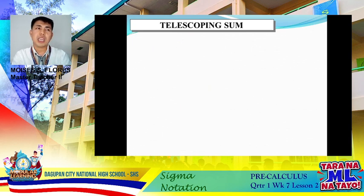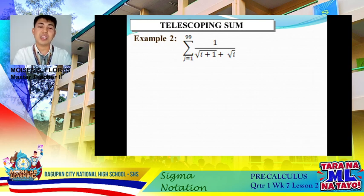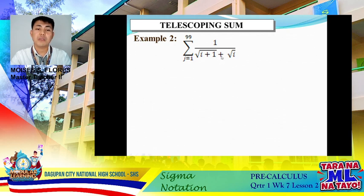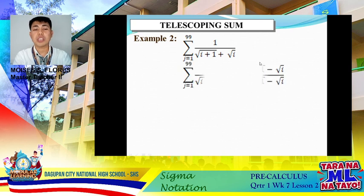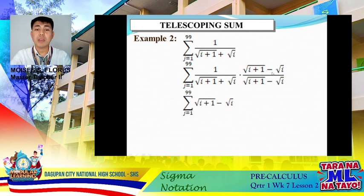Let's try another example with a radical sign: the summation of 1 over (√(i+1) + √i) as i goes from 1 to 99. This would consume a lot of time manually. Applying the concept of conjugates on the denominator — since it's a binomial, we multiply numerator and denominator by the conjugate √(i+1) − √i. This removes the radical denominator, leaving √(i+1) − √i in the numerator.